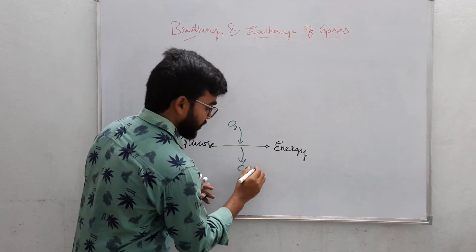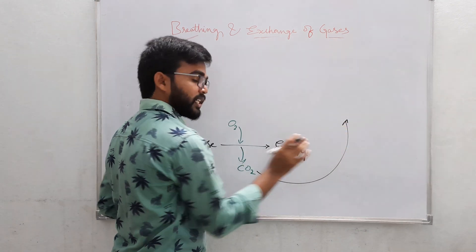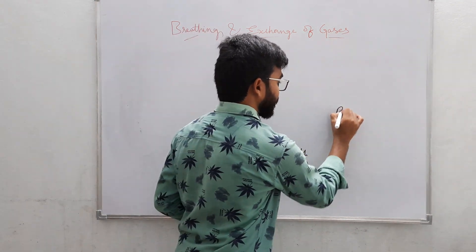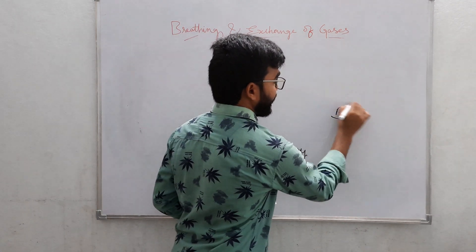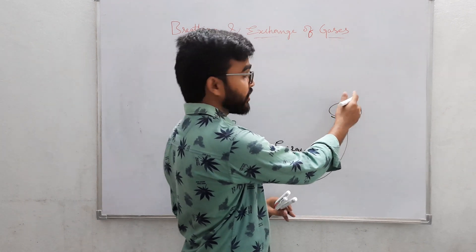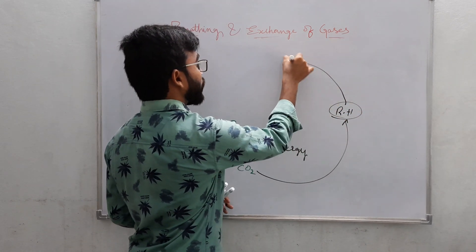The deoxygenated blood is carried out from the tissue to the right heart, and here the deoxygenated blood will be given to the lungs.